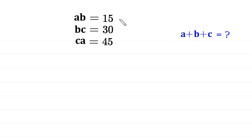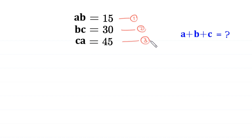Let us call this equation 1, this equation 2, this equation 3. Now, first we find the value of A times B times C. To find this value, we multiply all these three equations.